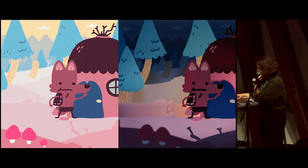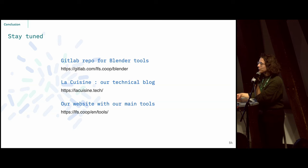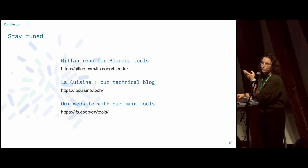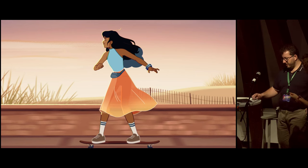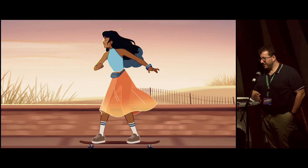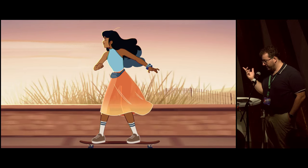Here is a comparison between the Grease Pencil version and the 3D rendering — in particular the background gained a lot of depth from the different lights. Our GitLab is full of tools we share, including these open sequences. We also have a technical blog and a page on our website for all tools and technical content.